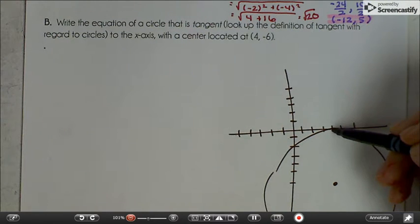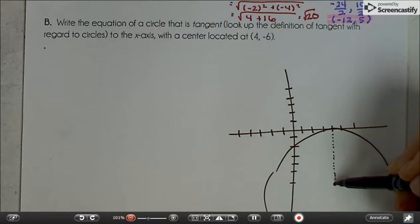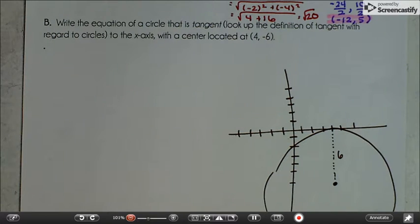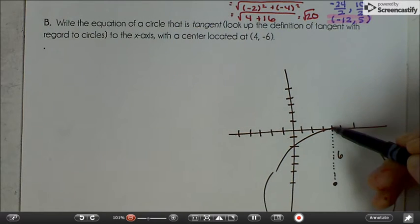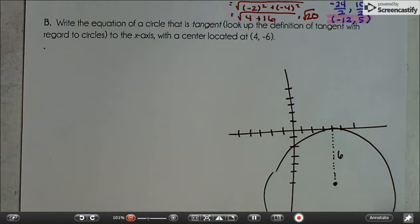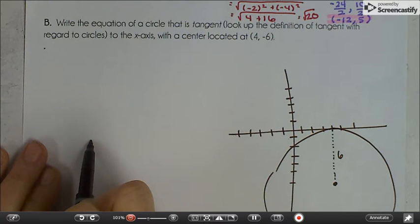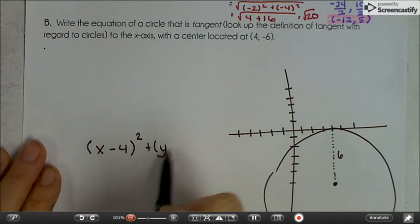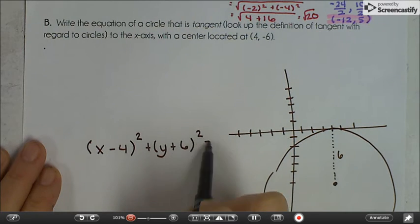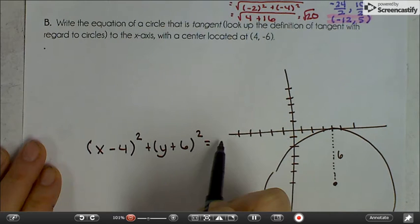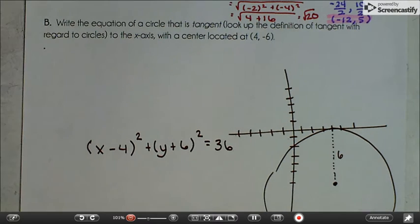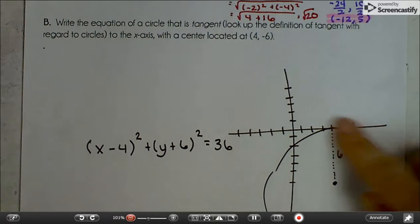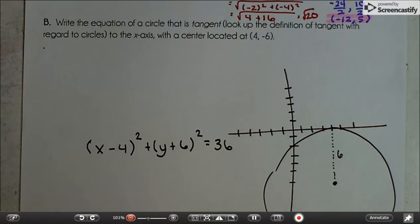So then how long would the radius be? Wouldn't it be 6? Because that's how far it is from the center to the x axis. So the equation of that circle would be x minus 4, that's the center, squared, plus y plus 6, squared, equals 6 squared, which is 36. So that one's not super hard if you know the definition of tangent and you can picture what that means. I always would draw one. It helps. All right. Equation of a circle, done.